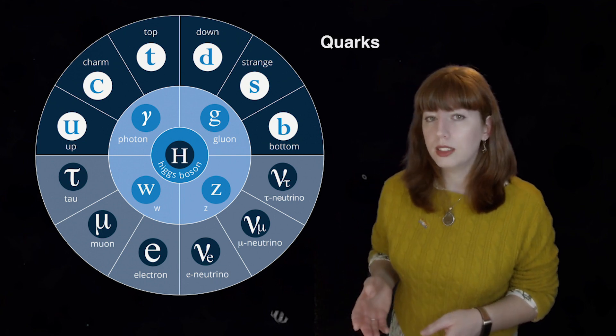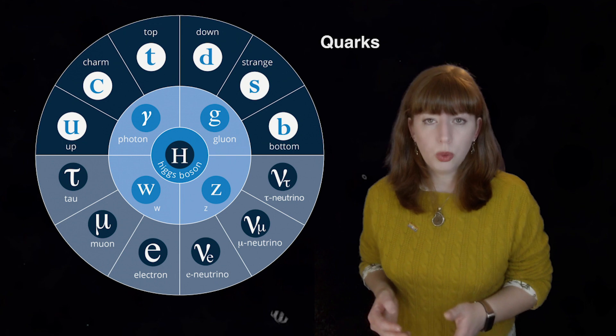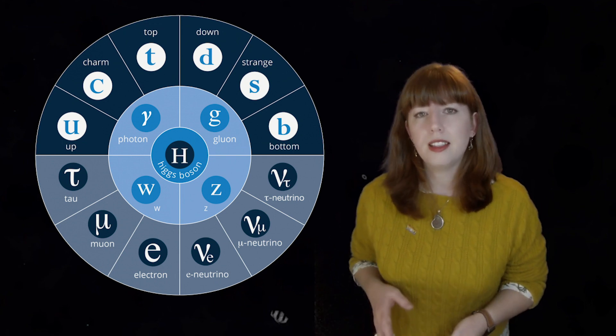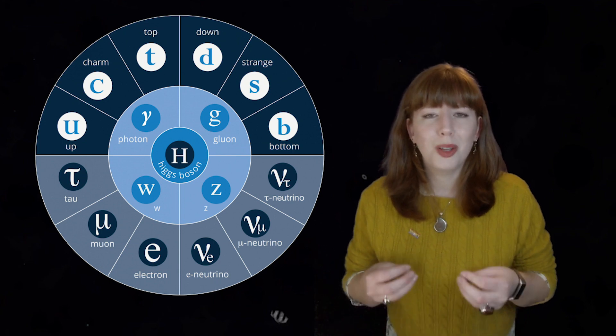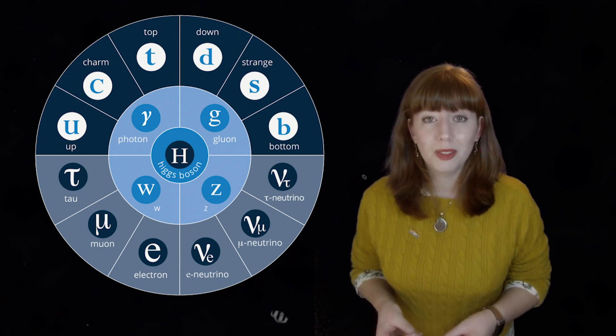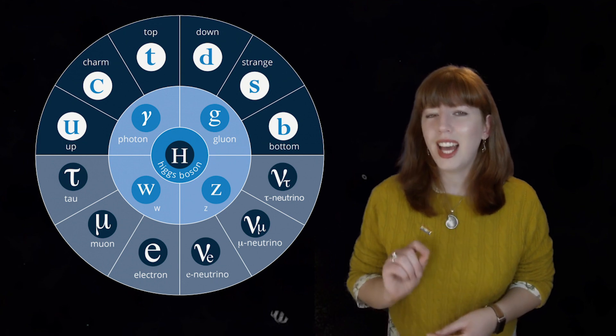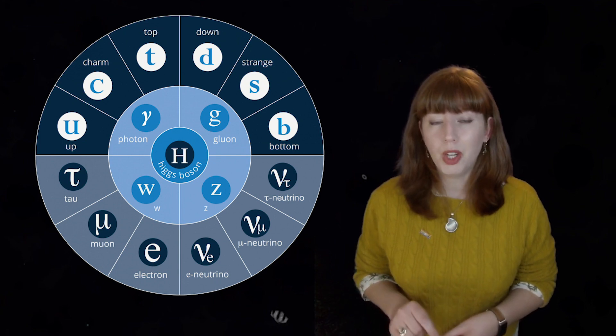Now the U, the up quark, and the D, the down quark, are inside of the protons and neutrons. The top quark is actually the heaviest particle that we know of.